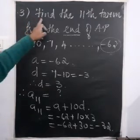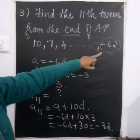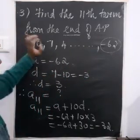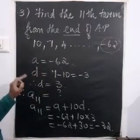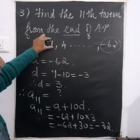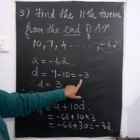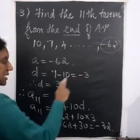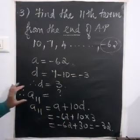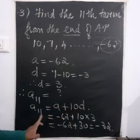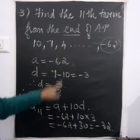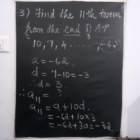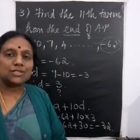To recap: find the 11th term from the end of the AP 10, 7, 4, etc., up to minus 62. Since we want from the end, instead of taking A as 10, we take A as minus 62. For D, 7 minus 10 equals minus 3, but since we are taking from the end, we change the sign — if it is minus, it becomes plus, and if it is plus, it becomes minus. So D becomes plus 3. Then A11 equals A plus 10D: minus 62 plus 10 into 3 equals minus 62 plus 30, which equals minus 32. I hope you have understood the application of the AN formula.